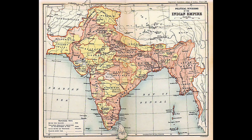On the 20th of July 2017, Ramnath Kovind was elected India's 14th president and took the oath of office on the 25th of July 2017. India is a federation with a parliamentary system governed under the Constitution of India, which serves as the country's supreme legal document. It is a constitutional republic and representative democracy, in which majority rule is tempered by minority rights protected by law. Federalism in India defines the power distribution between the union, or central, government and the states. The government abides by constitutional checks and balances.